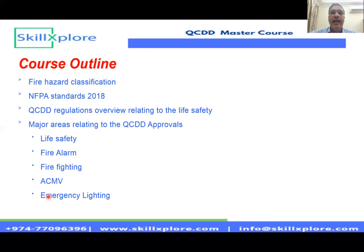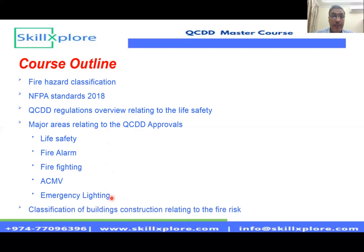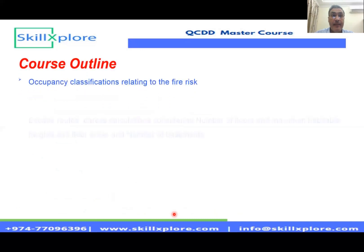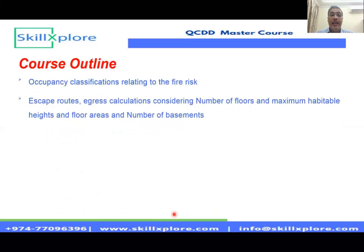We'll cover the types of ventilation — mechanical ventilation and natural ventilation — and the QCDD requirements for each. We'll also discuss emergency lighting as part of the life safety system. To apply all of these systems, we need to understand the classification of buildings under construction and the associated fire risk.